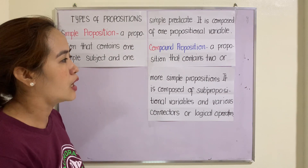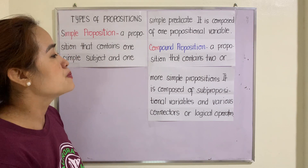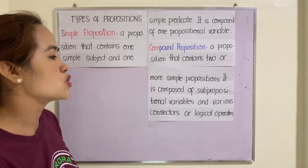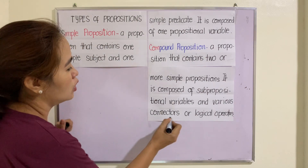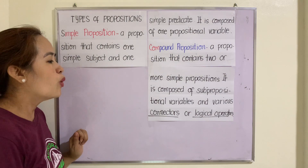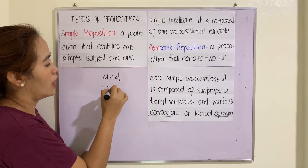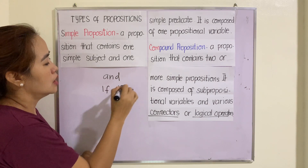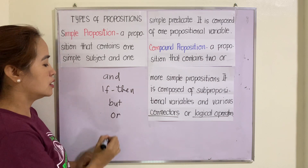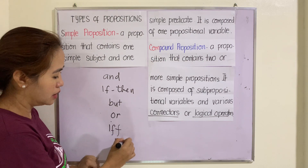Take note that a simple proposition is composed of only one propositional variable. A compound proposition is a proposition that contains two or more simple propositions. It is composed of sub-propositional variables and various connectors or logical operators. These connectors can be 'and', 'if-then', 'but', 'or', 'if and only if', 'yet', and many others.